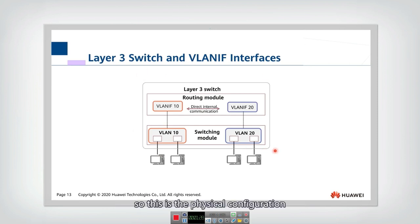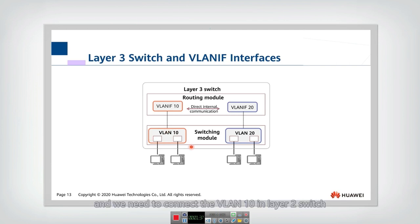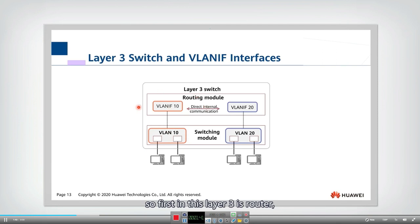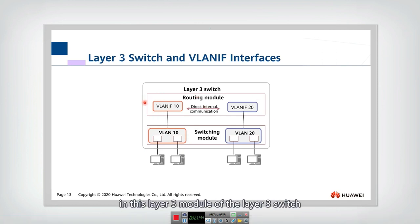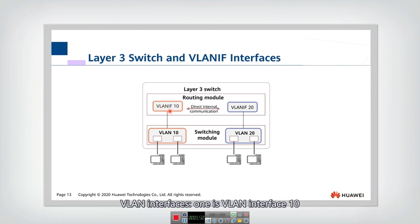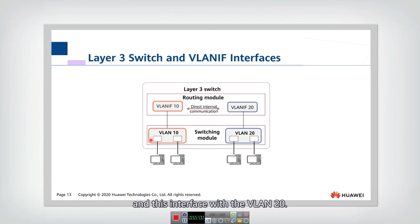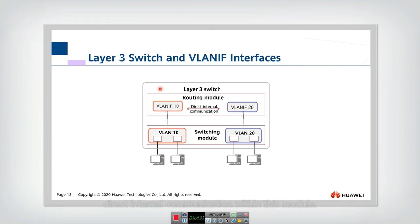This is the physical configuration of this VLAN interface. We need to connect VLAN 10 in the Layer 2 switch with a VLAN interface. In the Layer 3 module of the Layer 3 switch, we need to set up two VLAN interfaces: one is VLAN interface 10, another is VLAN interface 20. We also need to match VLAN interface 10 with VLAN 10 and VLAN interface 20 with VLAN 20. These two interfaces have direct internal communication within this module, allowing us to forward packets using the routing module.